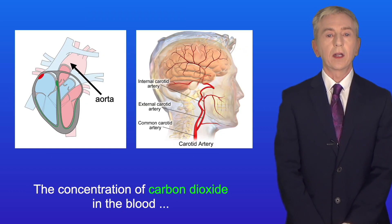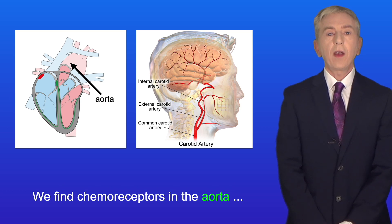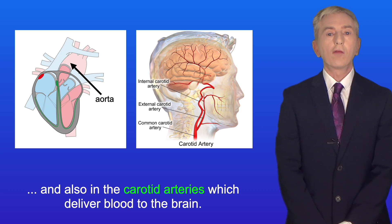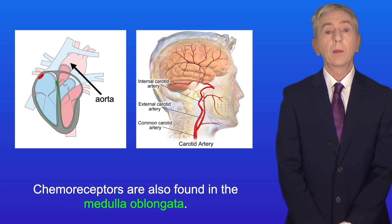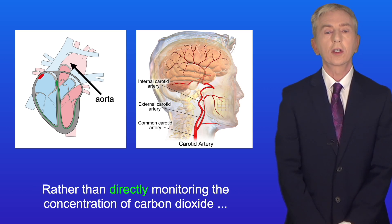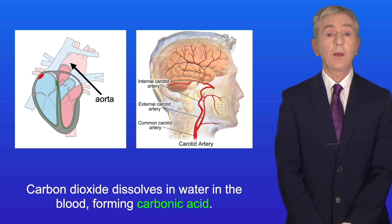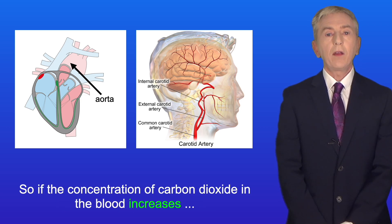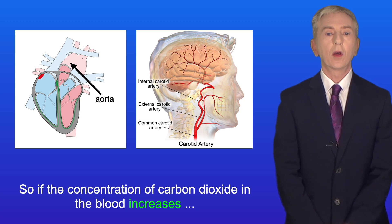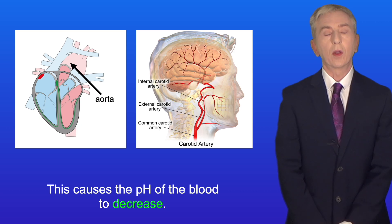The concentration of carbon dioxide in the blood is monitored by receptors called chemoreceptors. We find chemoreceptors in the aorta and also in the carotid arteries, which deliver blood to the brain. Chemoreceptors are also found in the medulla oblongata. Rather than directly monitoring the concentration of carbon dioxide, chemoreceptors actually monitor the pH of the blood. Carbon dioxide dissolves in water in the blood, forming carbonic acid, so if the concentration of carbon dioxide increases, more carbonic acid is formed and the pH of the blood decreases.